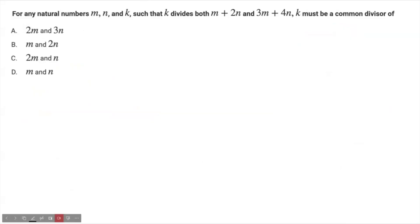For any natural numbers m, n, and k, such that k divides both m+2n and 3m+4n, k must be a common divisor. This is a simple question. The way I prefer solving this is to plug in values for m and n.